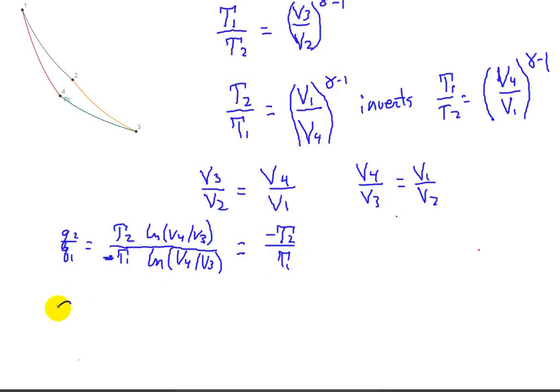So efficiency was equal to 1 plus Q2 over Q1. So that means efficiency is going to be equal to 1 minus T2 over T1. And that concludes the derivation.